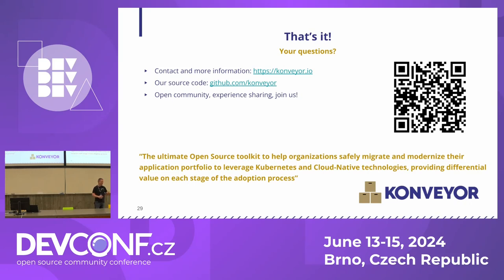Regarding the question about unmaintained applications — whether Konveyor can check applications that need to be migrated but are unmaintained — yes it should, but it heavily depends on the rules. The rules provided out of the box may not cover every case; it depends on the technology the application is built on. For Java, there are rules related to Spring and EAP6/7, so generally yes, but specifically it depends on the exact technology and the rules currently present.